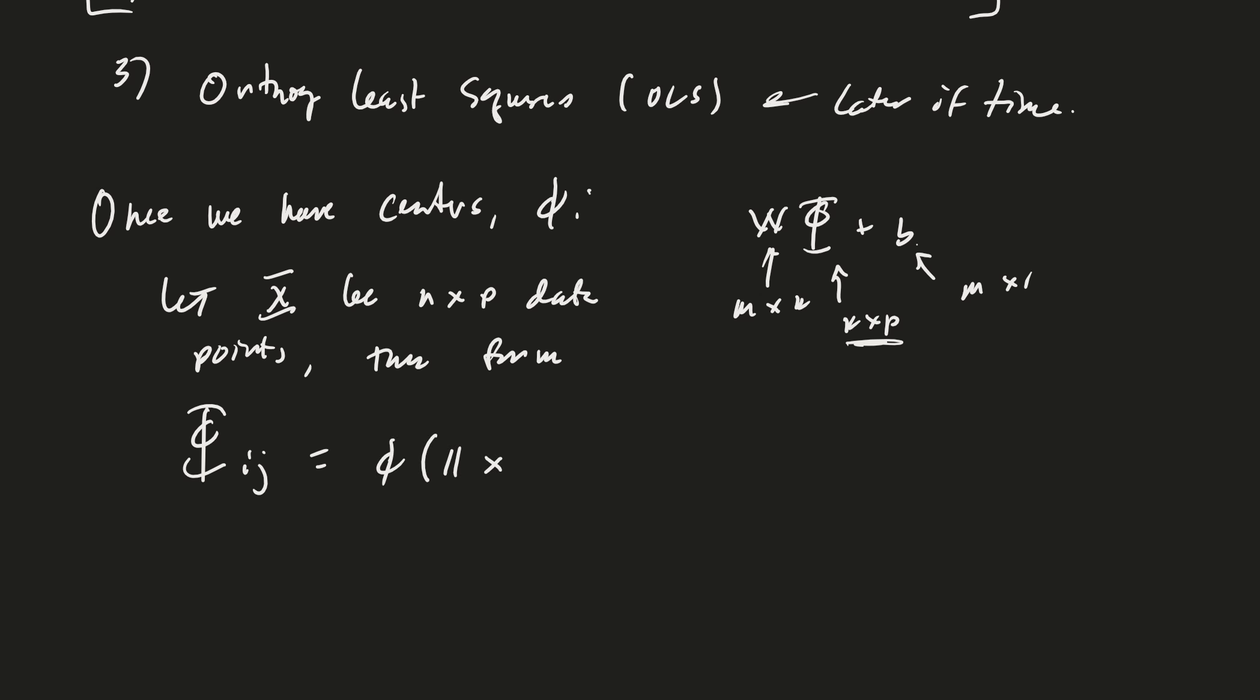Then I can form matrix phi, where phi_ij is equal to small phi, and then it's the norm of which data point with which center. The i is measuring which center, so that's going to be c_i, and then the j is measuring which data point.